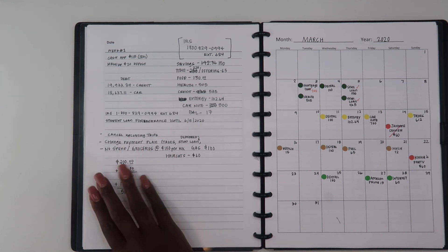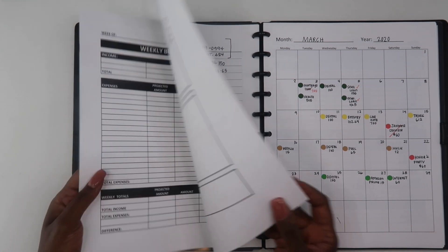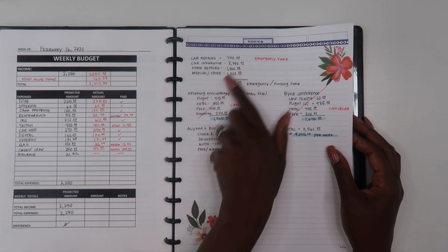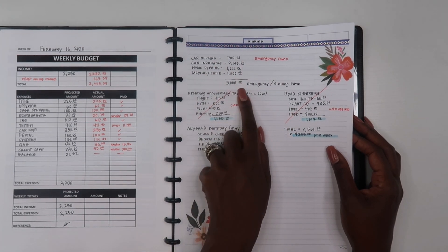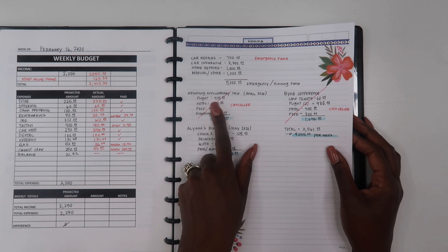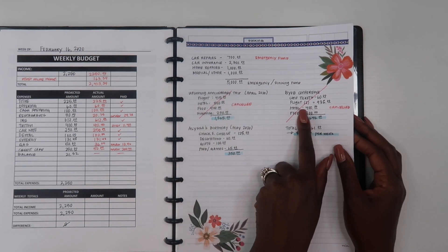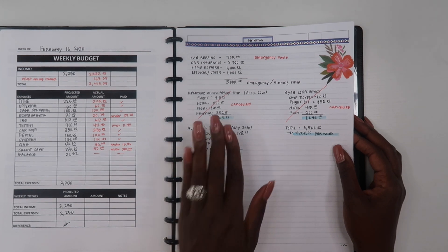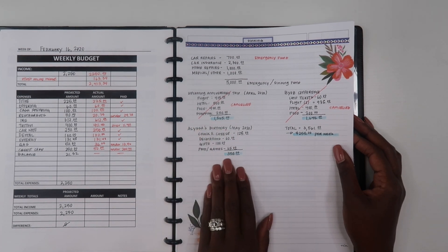The first thing that I did that I wanted to talk about is cancel all upcoming trips. If you remember a couple weeks ago I did do my sinking fund spread and I was showing you guys how we saved $5,000 in our emergency fund. We had an upcoming anniversary trip, the BYOB conference, and Alyssa's birthday.